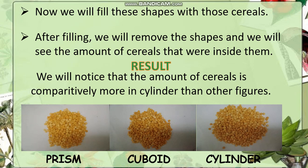As we can see in the following pictures, the amount of cereals that came out of the cylinder is more than in comparison to the prism or cuboid. Thus, we come to a conclusion that the more the volume of the trunk would be, the more the strength and the power it would uphold to hold the tree for a longer time.